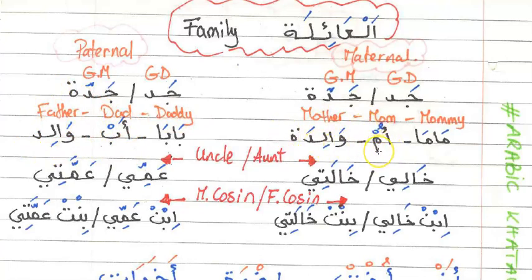You can say ummi, walidati, abhi, and walidi, but it would be hard to say mamayi. So mama and baba are not applicable with possession — when you say 'my.' They don't take the possessive suffix the way the formal words do.